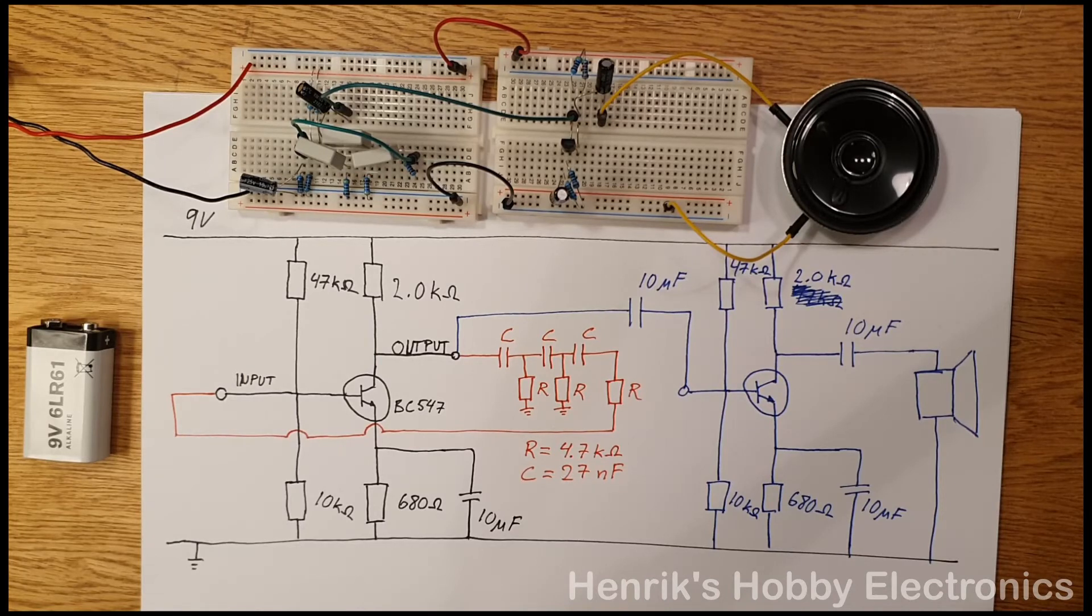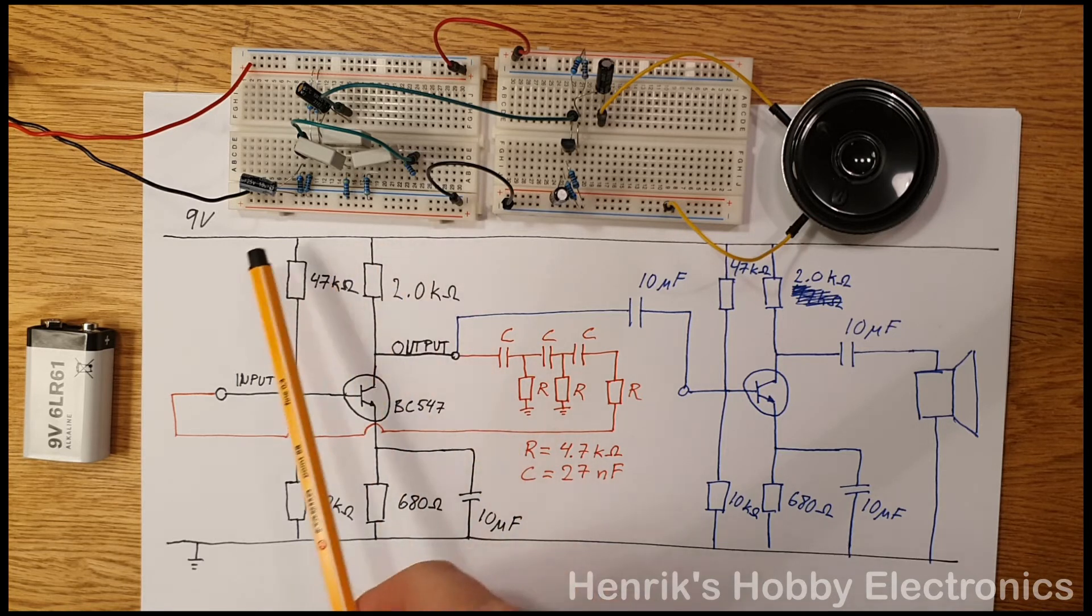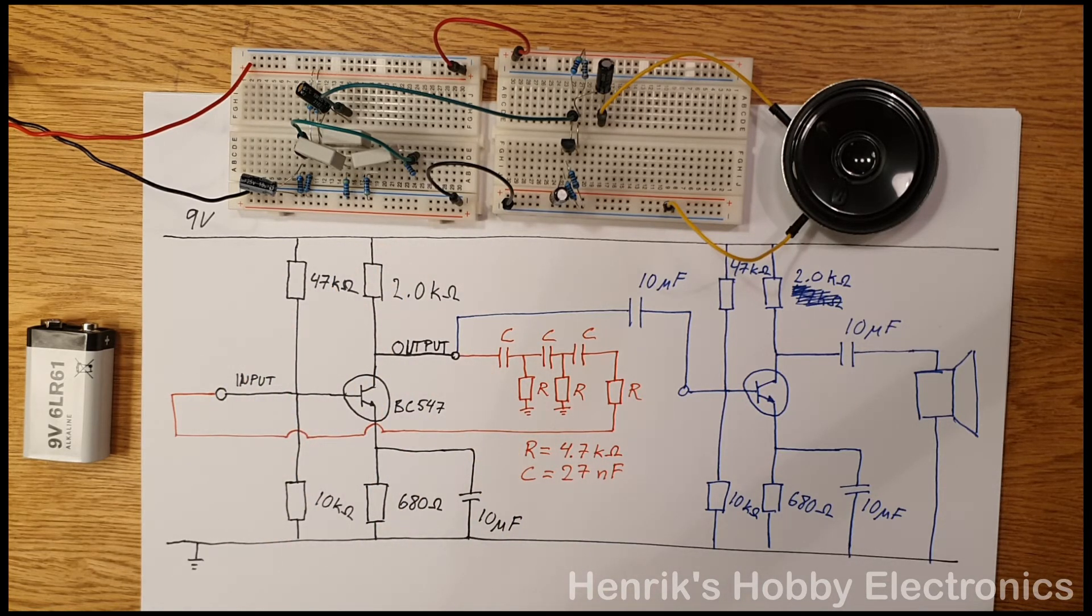Now this is how it's implemented on the breadboard. In black here we can see a common emitter amplifier. I made a video recently explaining how this common emitter amplifier works. You have these four resistors here and you have an input and you have an output. This capacitor is also part of the amplifier.